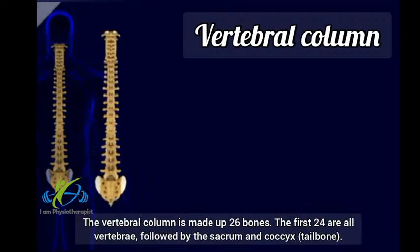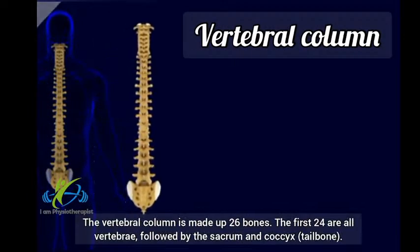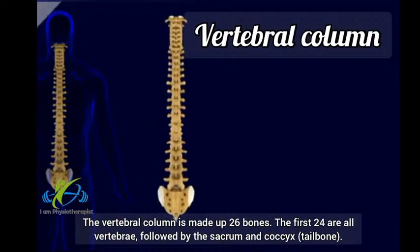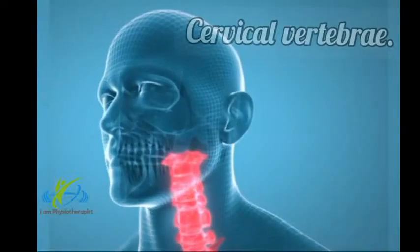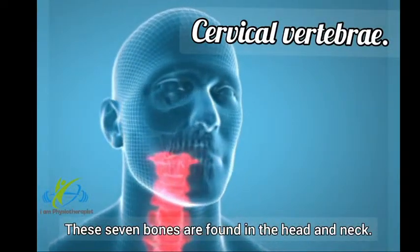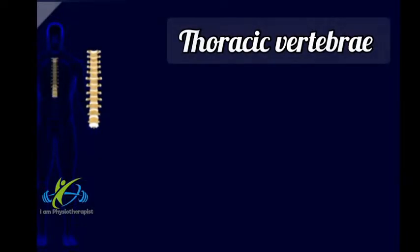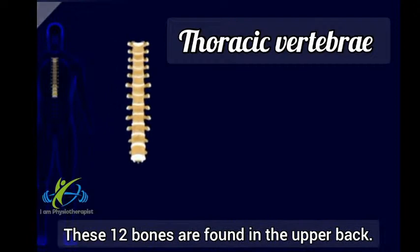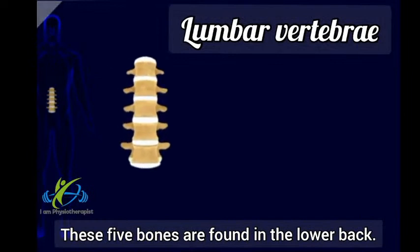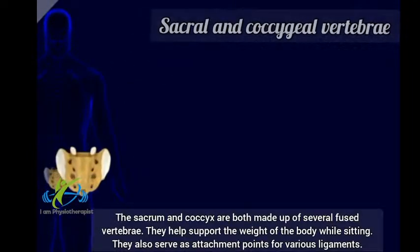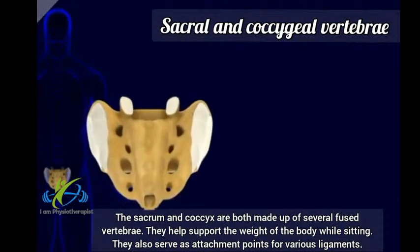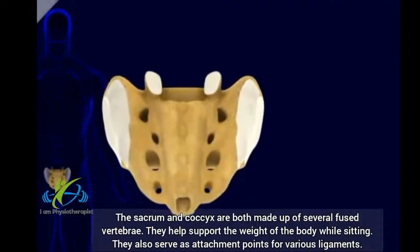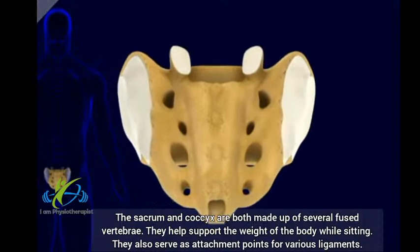Vertebral column: The vertebral column is made up of 26 bones. The first 24 are all vertebrae, followed by the sacrum and coccyx tailbone. Cervical vertebrae: these 7 bones are found in the head and neck. Thoracic vertebrae: these 12 bones are found in the upper back. The sacrum and coccyx are both made up of several fused vertebrae; they help support the weight of the body while sitting and also serve as attachment points for various ligaments.